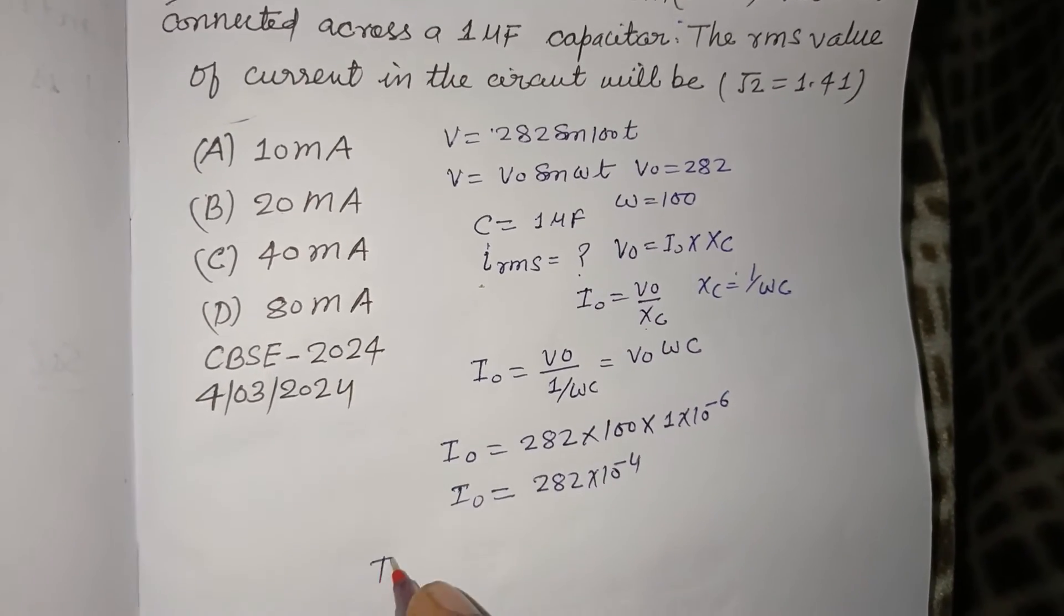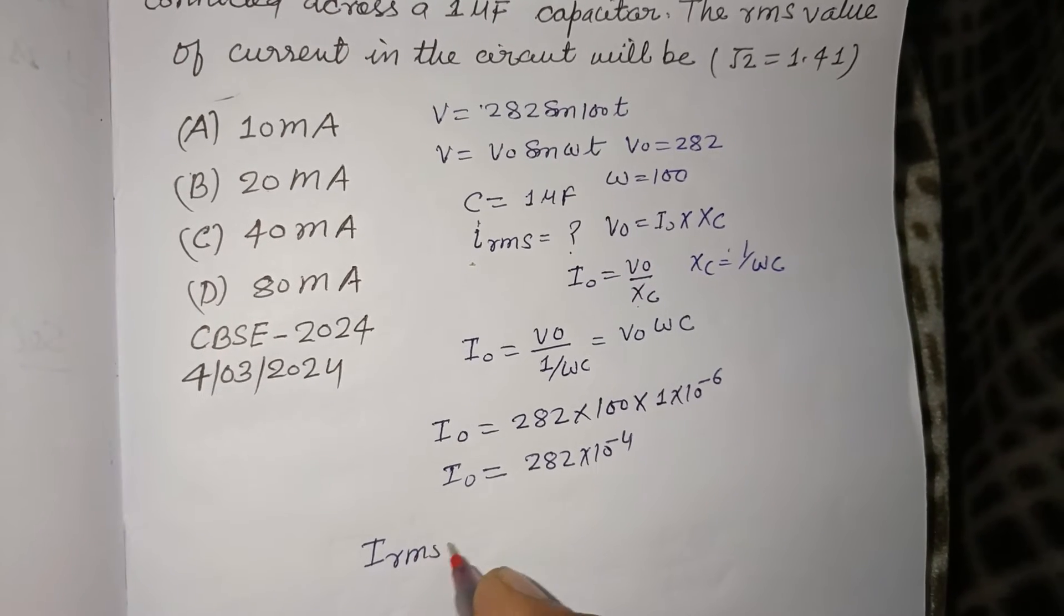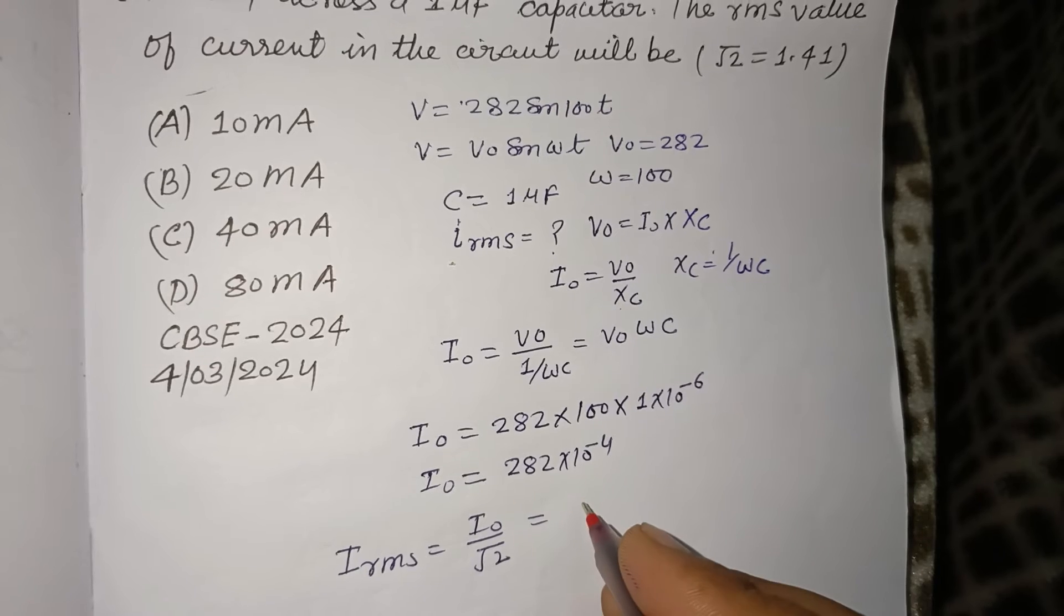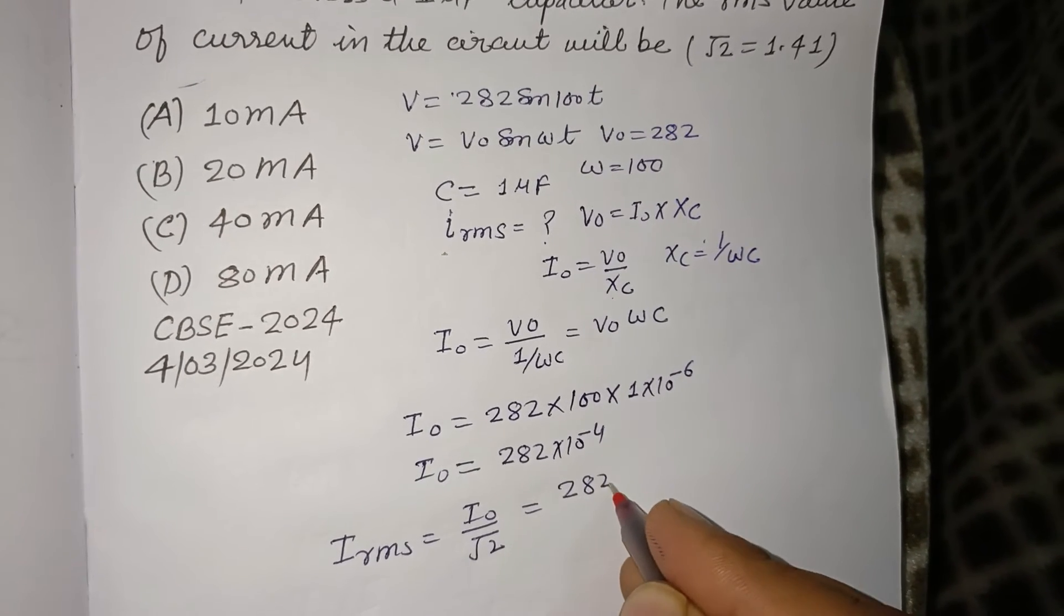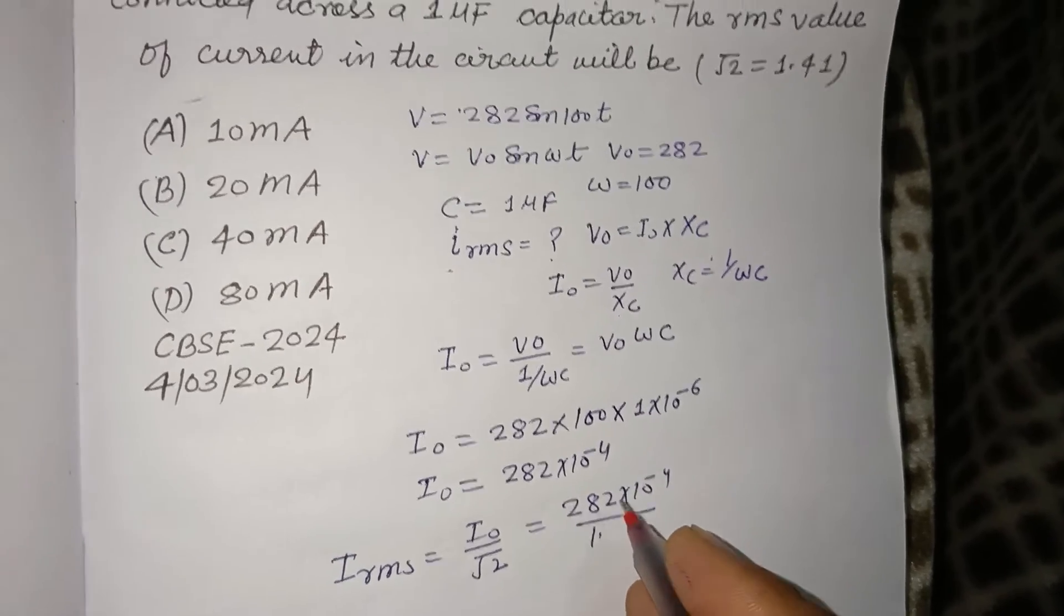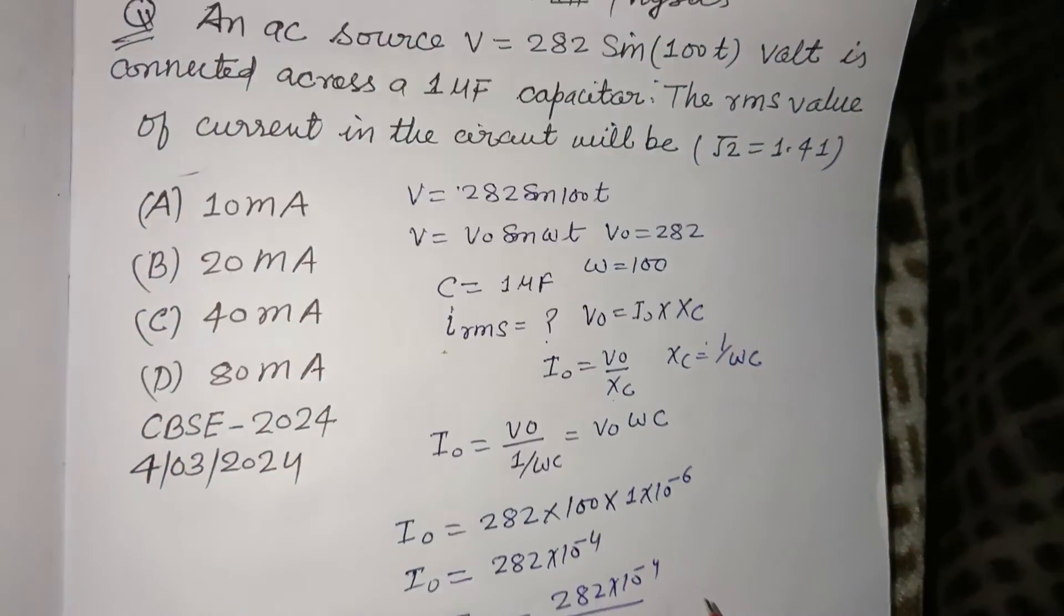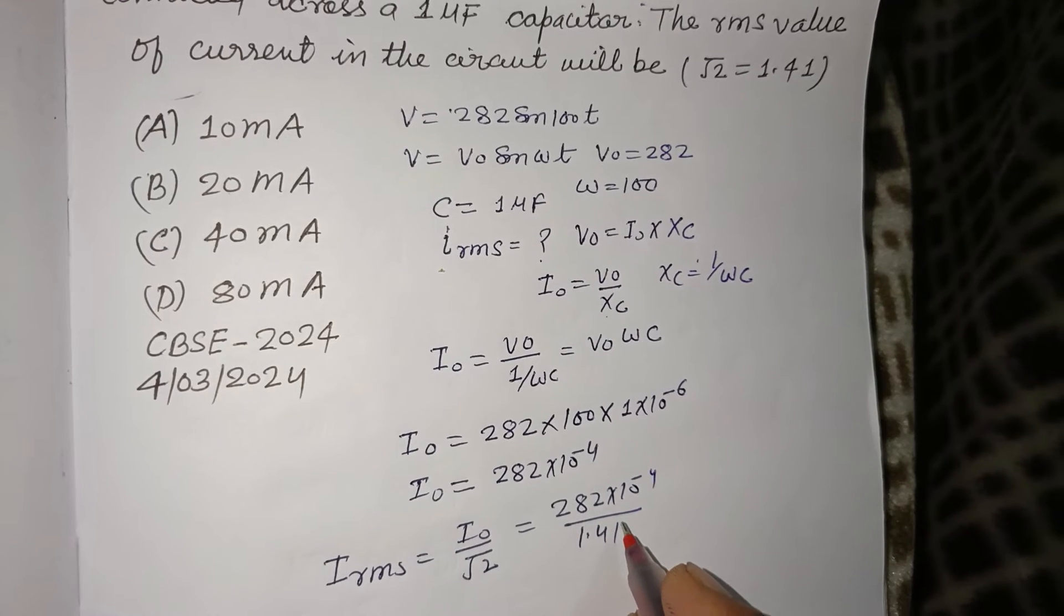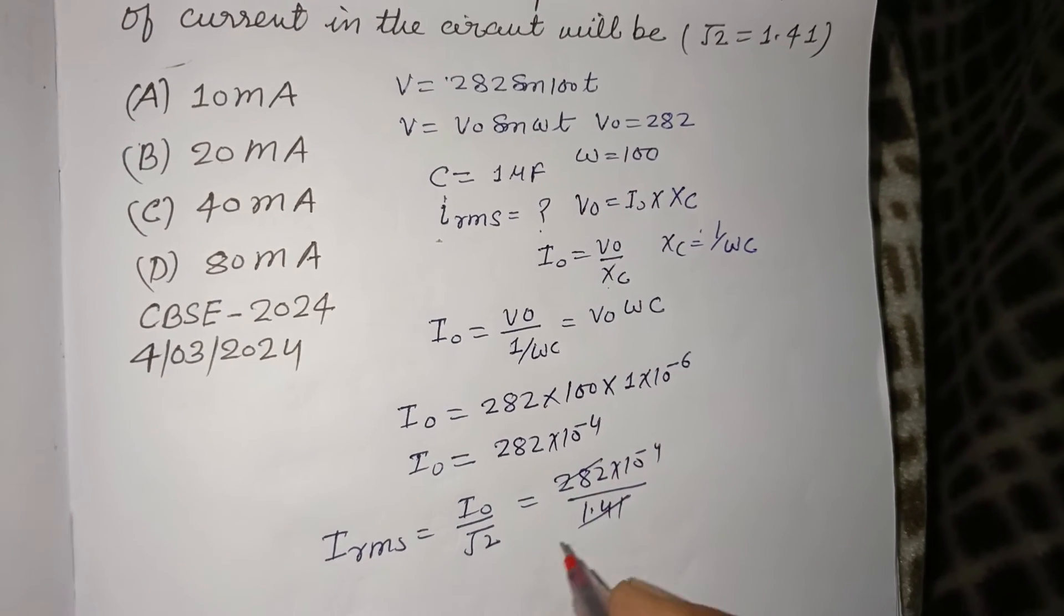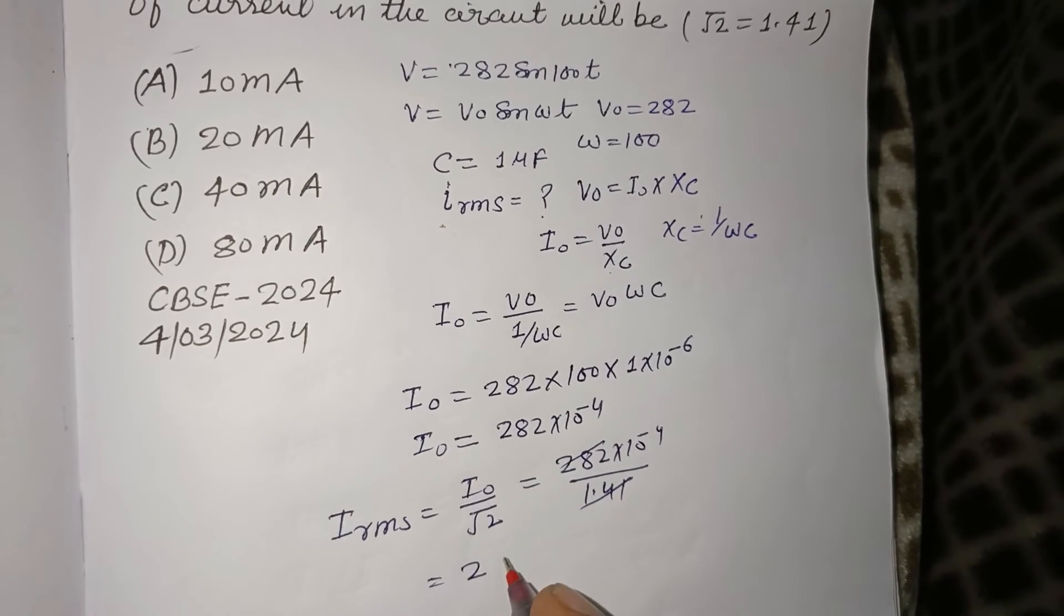We know that IRMS = I0/√2. So IRMS = (282 × 10^-4)/√2 = (282/√2) × 10^-4. Since √2 = 1.414, we divide 282 by 1.414.